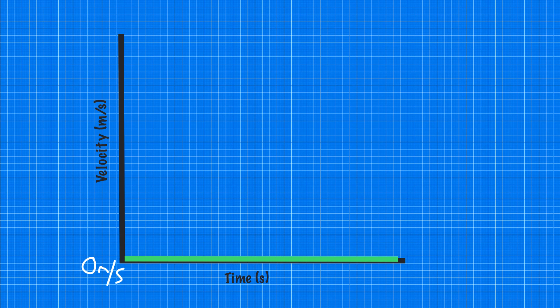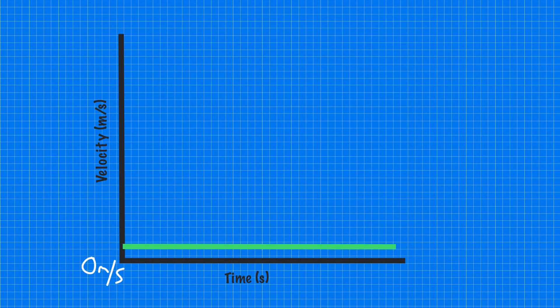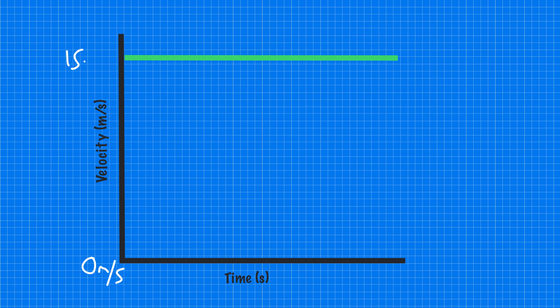This line would look very similar for an object that is at a constant velocity. Remember a constant velocity means it isn't changing its velocity. So say for example if it was a car and the car was travelling at 15 metres per second at a constant velocity, then we'd have a straight line on our graph at 15 metres per second. I'm going to letter that with A and that's going to represent our constant velocity.